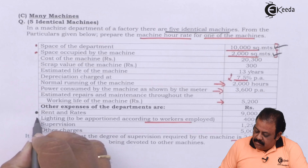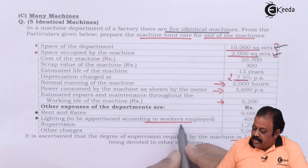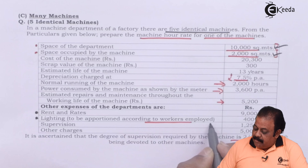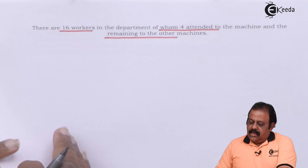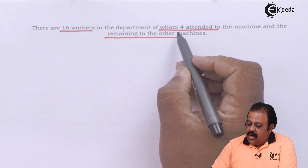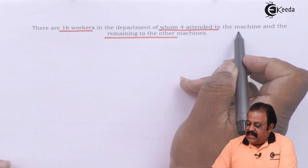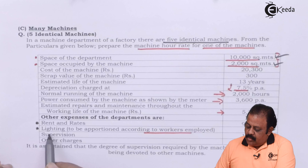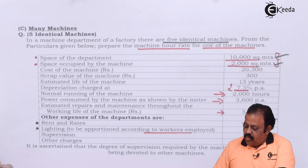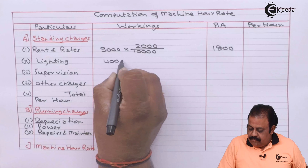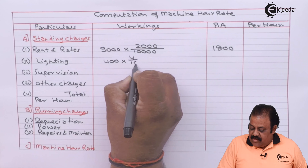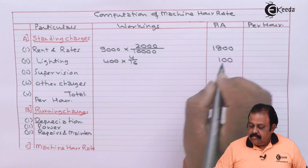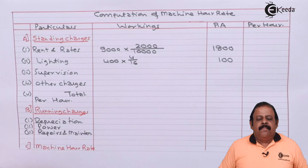Lighting is to be apportioned according to the workers employed. The expense given is Rs. 400. There are 16 workers in the department, of whom 4 attended to the machine. So 400 multiplied by 4 workers out of 16 workers gives Rs. 100 per annum.